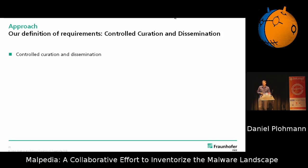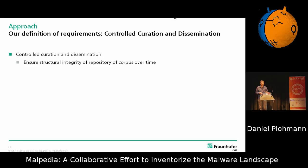Controlled curation and dissemination: we want to ensure the structure of the whole repository stays intact even over the course of time with more users contributing to the data. And limiting access is basically needed to avoid harm to the general public — because if you just download the stuff and let it run, that's probably not a good idea. You might have some users not familiar with how you treat malware and they might just download it and double-click it, and I don't want to be blamed for that.